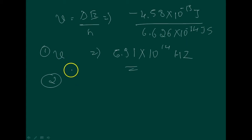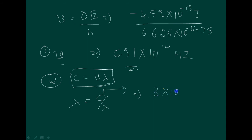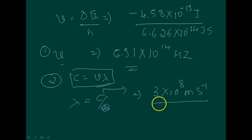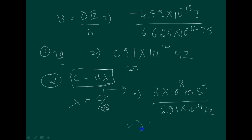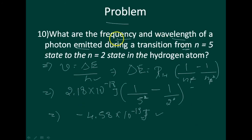To find wavelength, use the relation c equals v times lambda. So lambda equals c divided by v. The velocity of light c is 3 into 10 raised to 8 meters per second, and v is 6.91 into 10 raised to 14 hertz. After solving and converting, the wavelength is 434 nanometers.